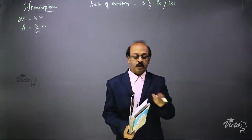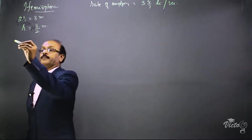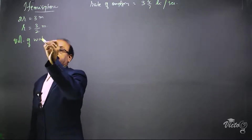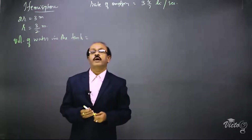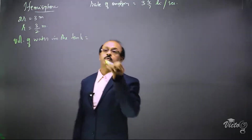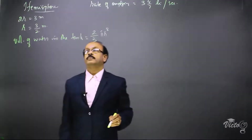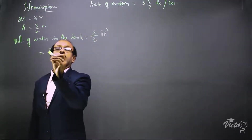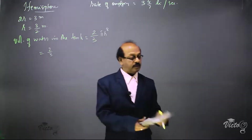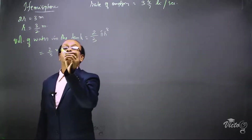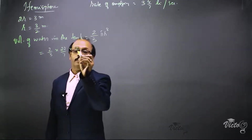Now we are going to find out the volume of water in the hemispherical tank. The volume of water in the tank is the volume of a hemisphere, which is equal to 2 by 3 π r³. So volume equals 2 by 3 into 22 by 7 into r³.